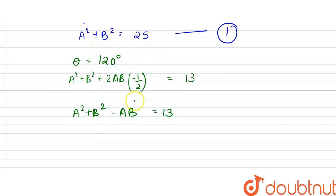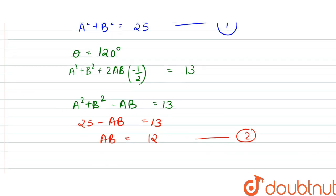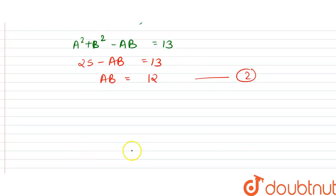From the first equation, since A squared plus B squared is 25, we can write 25 minus AB to be equal to 13. So AB would turn out to be equal to 25 minus 13, that is 12. So this is our second equation.